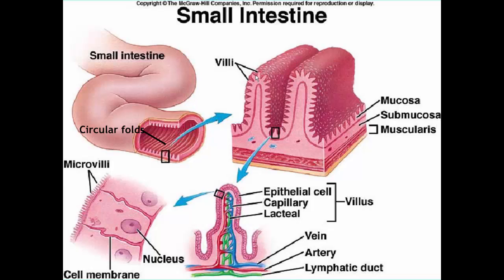Another structure is the villi — little finger-like projections visible on the surface of the circular folds. Circular folds themselves increase surface area considerably, and the villi add even more. Inside each villus are capillaries and lymphatic vessels called lacteals. When nutrients are absorbed through the columnar epithelial cells, the blood and lacteals pick up those nutrients and carry them to other parts of the body.